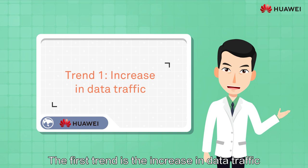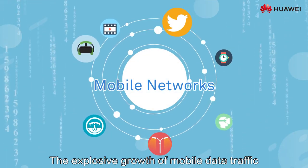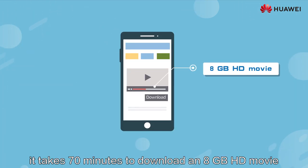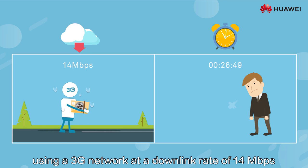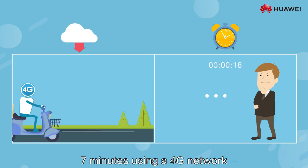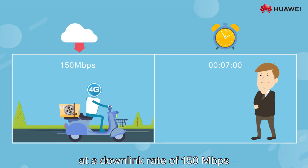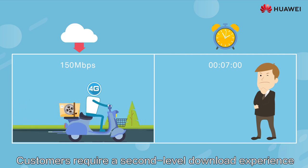The first trend is the increase in data traffic. The explosive growth of mobile data traffic requires a higher rate of the mobile network. For example, it takes 70 minutes to download an 8GB HD movie using a 3G network at a download rate of 14 Mbps, and 7 minutes using a 4G network at a downlink rate of 150 Mbps. However, 7 minutes remains a long period of time, and customers require a second-level download experience.